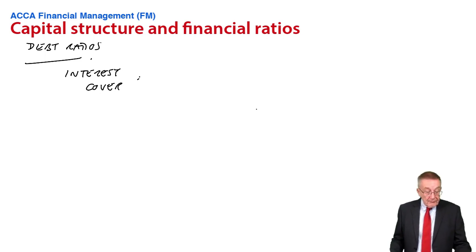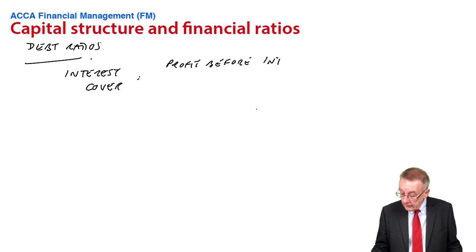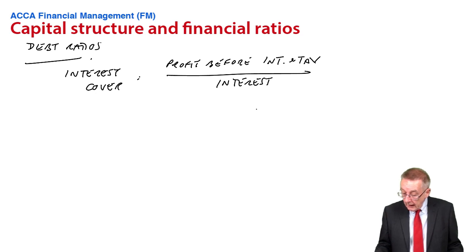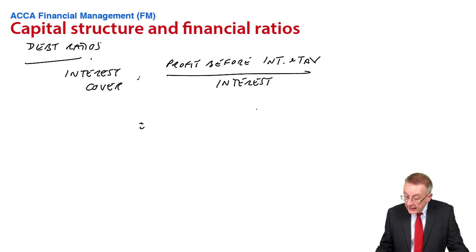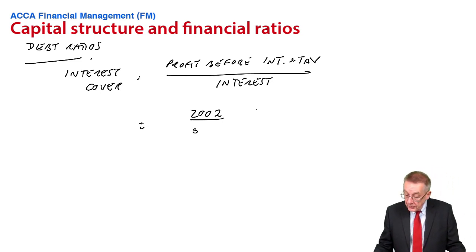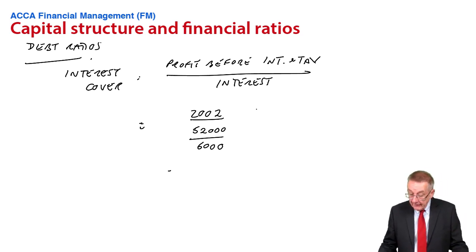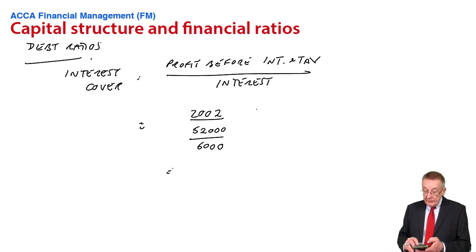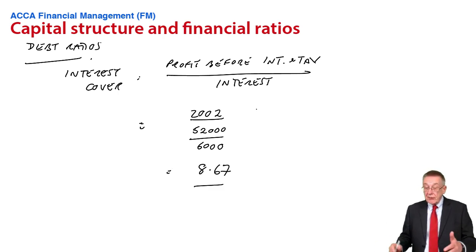Interest cover is the profit before interest and tax divided by the interest. In 2002, the profit before interest and tax was 52,000 and the interest was 6,000. So the interest cover, 52 divided by 6, is 8.67. We leave this as a number, as a ratio.